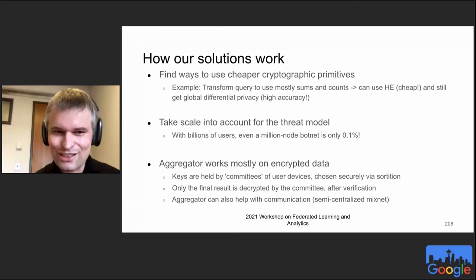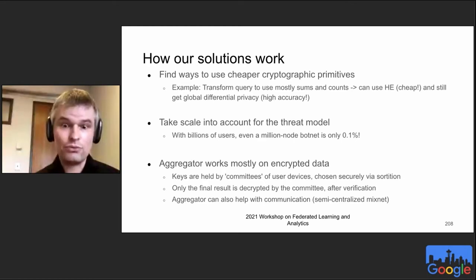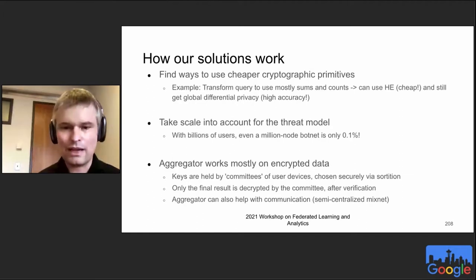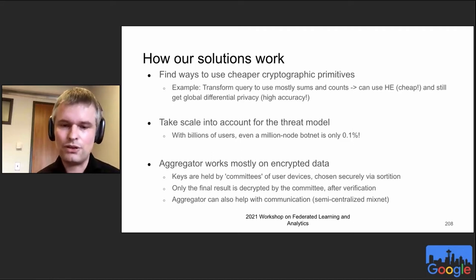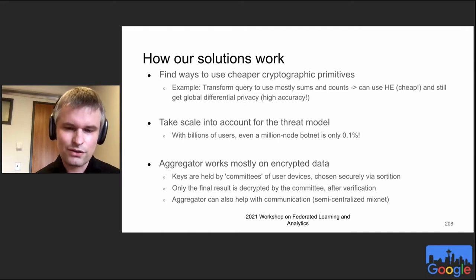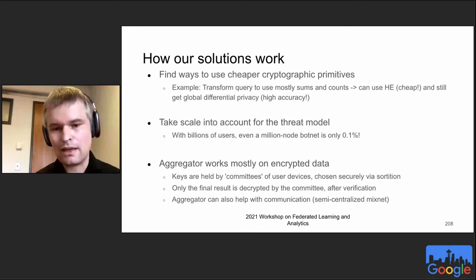At a high level, we try to avoid expensive crypto whenever we can. We take your query and rewrite it so we can answer most of it using cheap crypto, like additively homomorphic encryption, and still get the global differential privacy guarantees we want. We propose a slightly different threat model: it's common to assume a third of your user base can be malicious, but that seems pessimistic — if you have a billion users, even a botnet with 10 million users is only 1% of your user base. We keep plaintext data away from the aggregator by using cryptographic sortition to choose committees of user devices to hold shards of the cryptographic key material, then work on encrypted data. At the end, this committee noises and decrypts only the final result.